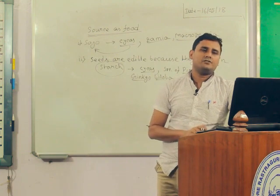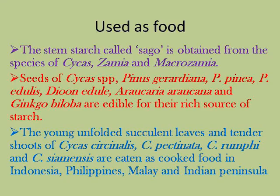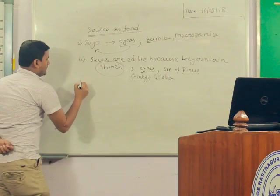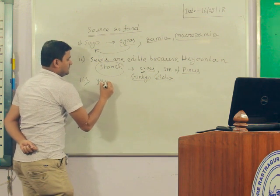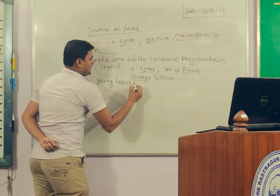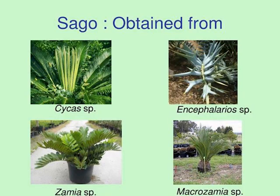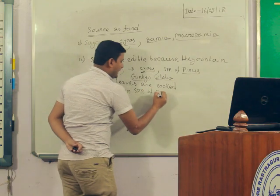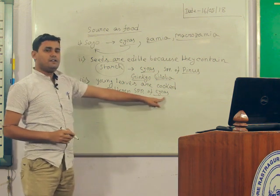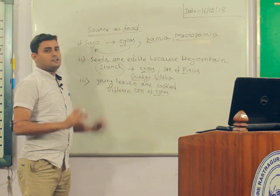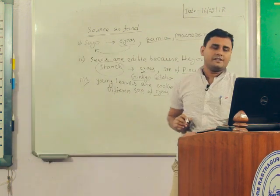Young unfolded succulent leaves and tender shoots of Cycas species — Cycas circinalis, Cycas pectinata, Cycas rumphii, and Cycas siamensis — are eaten as cooked food in Indonesia, the Philippines, and the Indian peninsula.